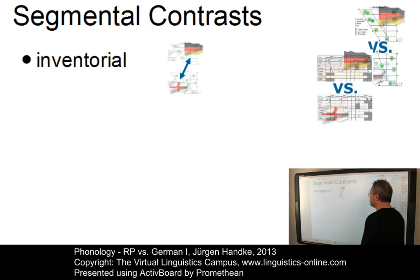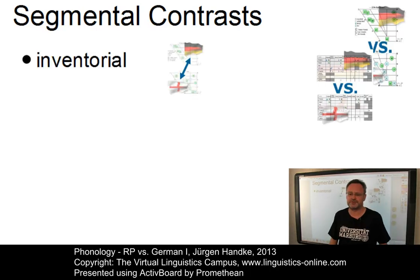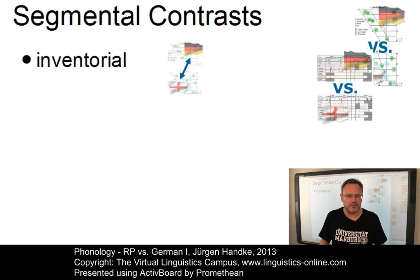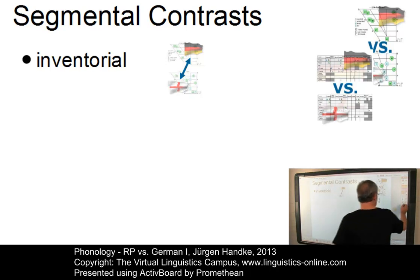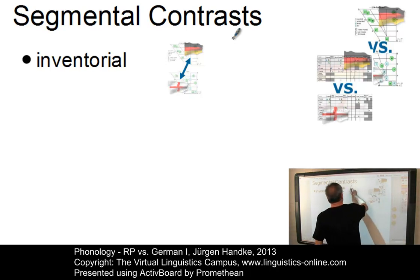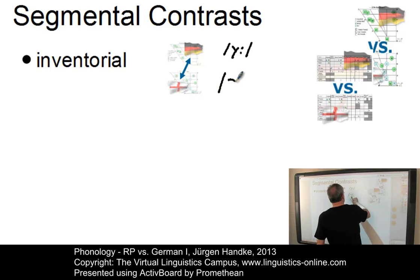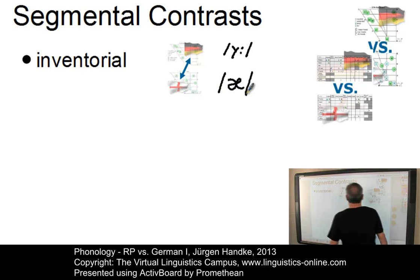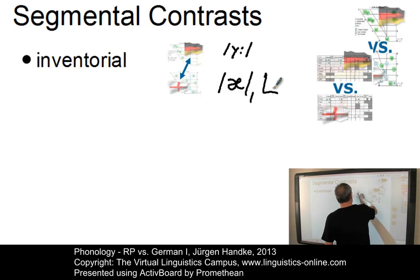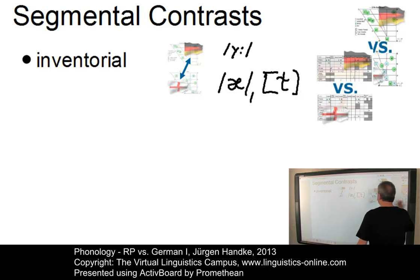First of all, we can identify inventorial differences — that is, a phoneme or an allophone exists only in either of the two languages. For example, the rounded front vowel in German, or the low front vowel in present-day English, or even on an allophonic level, the dark L in RP.